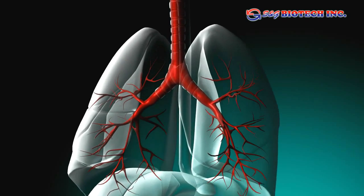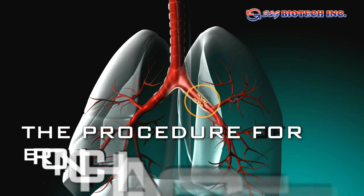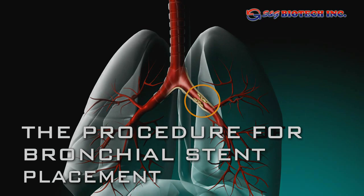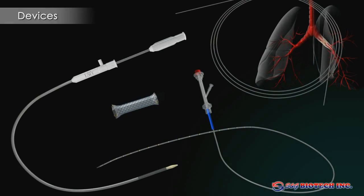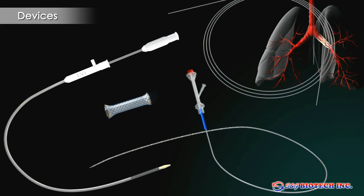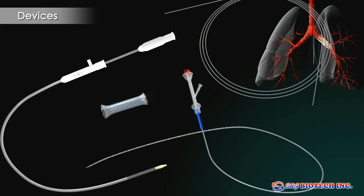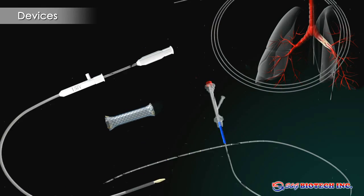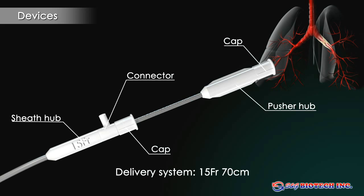Now, let's look at the procedure for bronchial stent placement. The delivery system used is 15 French, 70 cm.